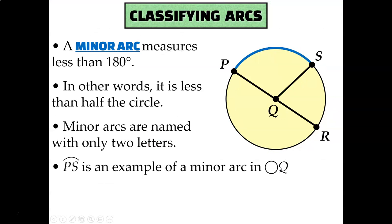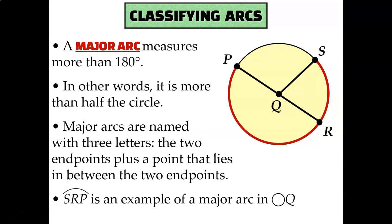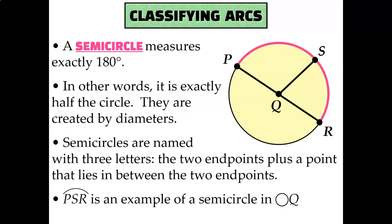We can classify arcs by how big they are. If an arc measures less than 180 degrees, we call it a minor arc — arc PS and arc SR are examples. Minor arcs are named with only two letters. Major arcs measure more than 180 degrees and require three letters, for example arc SRP, which is more than half the circle. If an arc measures exactly 180 degrees, it is half of a circle, and we call it a semicircle.